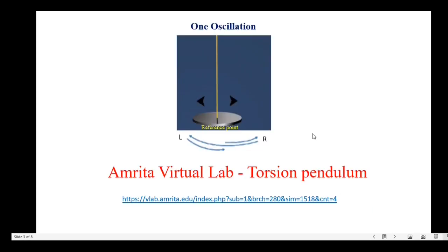Now let's define one oscillation. This is a suspension wire. We have a disc and this point is called the reference point. Once you click the right arrow it will begin to oscillate — first it will go to the right extreme, then to the left extreme, and again come back to the reference point. This complete motion is called one oscillation. I have given the link for the Torsion Pendulum virtual lab.